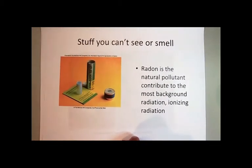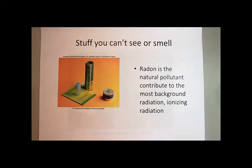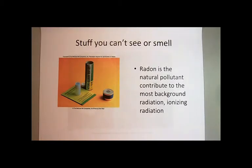There are also pollutants that you can't see or smell. An example of one indoor pollutant — we mentioned this in unit one when I was talking about natural radioactivity — is radon. Radon is a decay product in the uranium decay series, and it's a pollutant that contributes to most of the background radiation that we're exposed to. It can be found inside your house. If you live in a region where you have a basement, basements are dug into rocks, and rocks contain uranium. Over time, as the uranium decays, there's always a chance that radon will be present and can build up in your home.